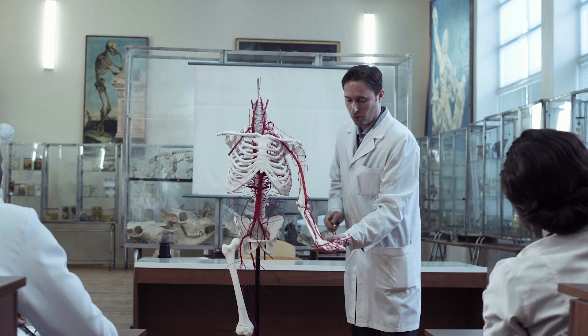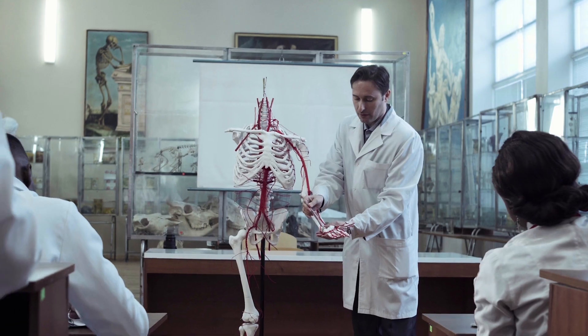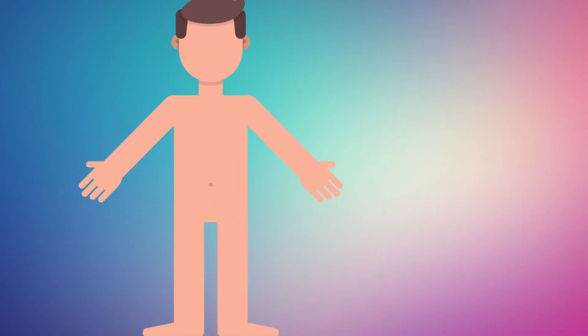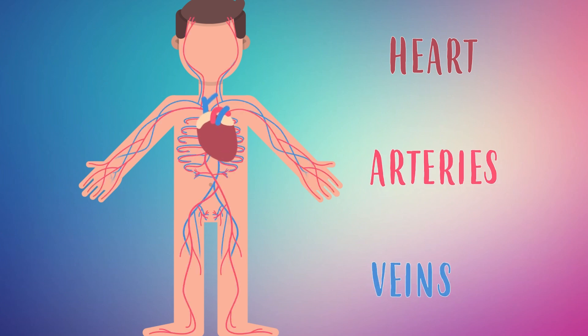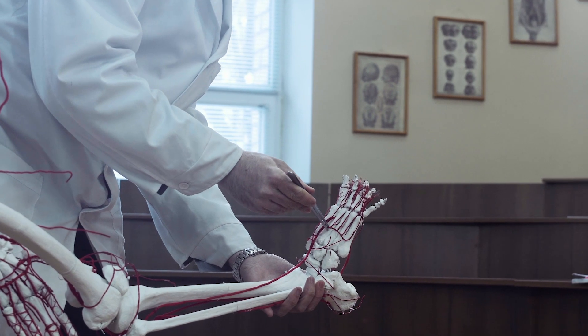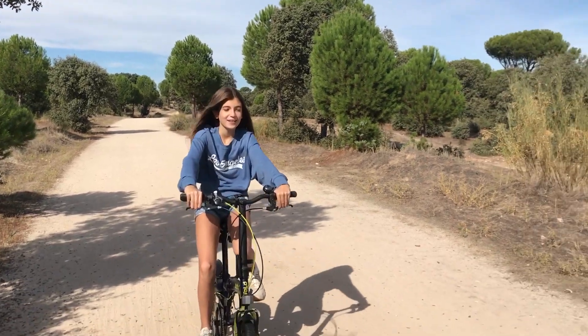The main function of the circulatory system is to carry through the blood the nutrients to the cells of our body. It is formed by the heart, arteries and veins, and its proper functioning is essential for us to have good health.